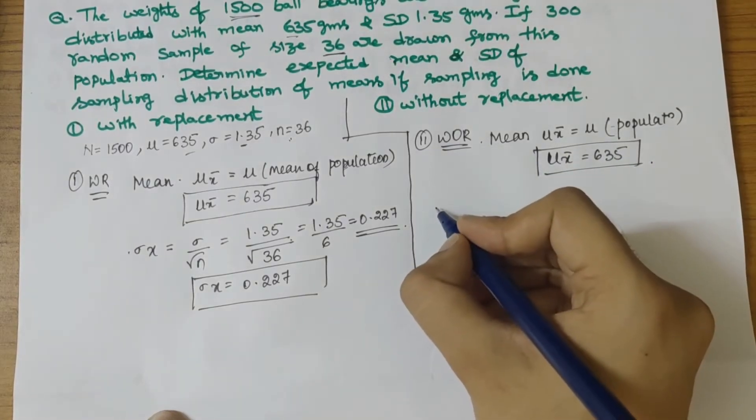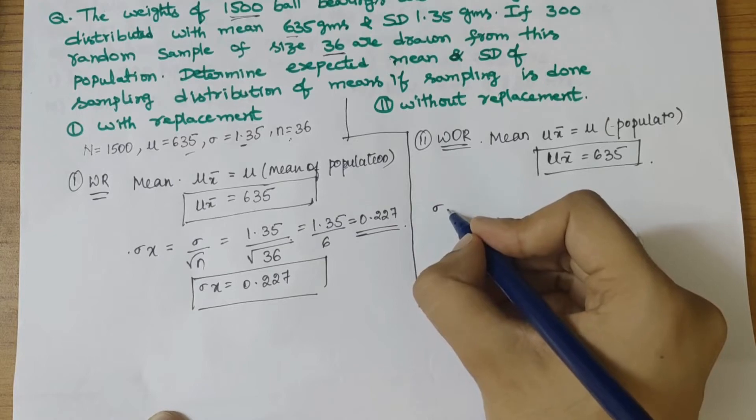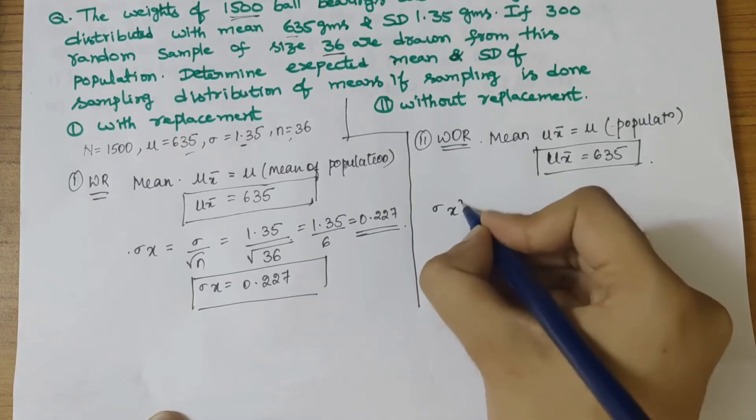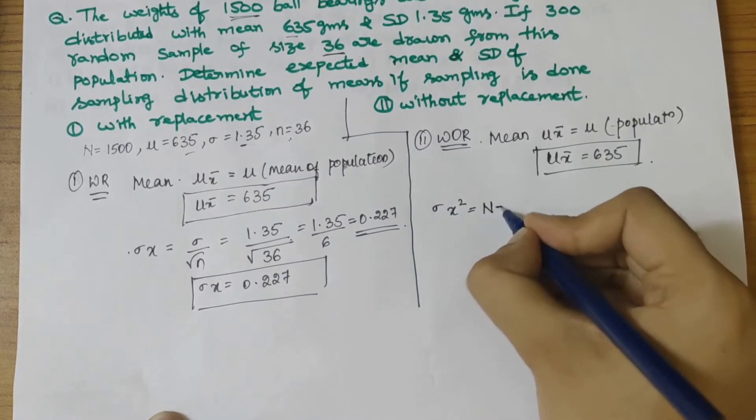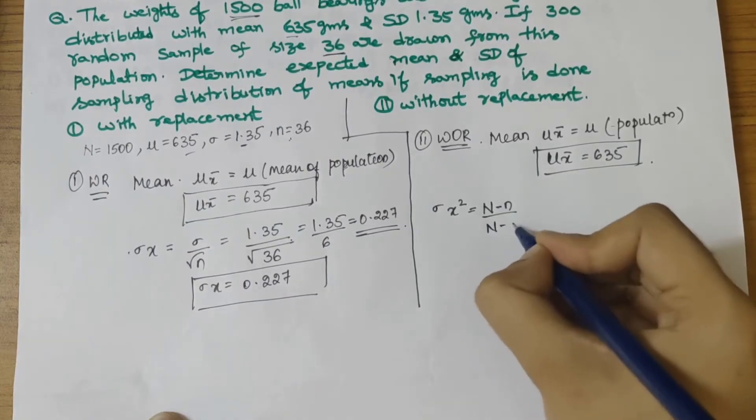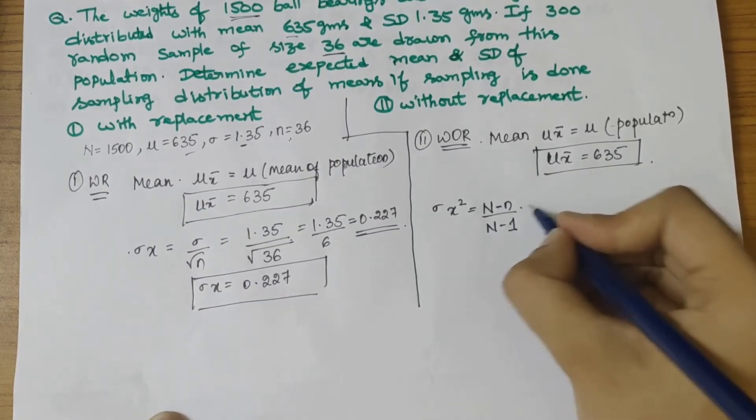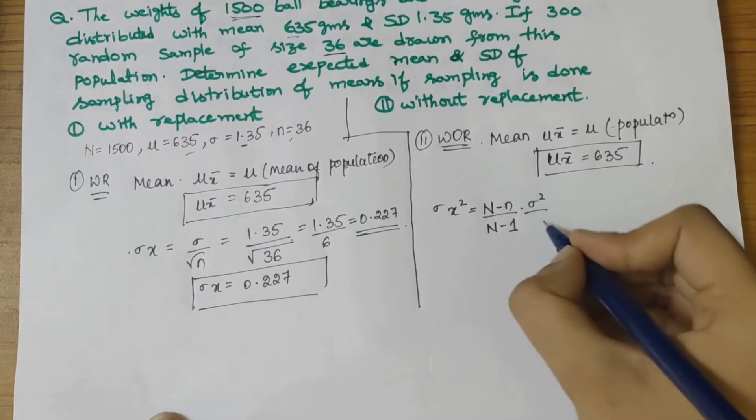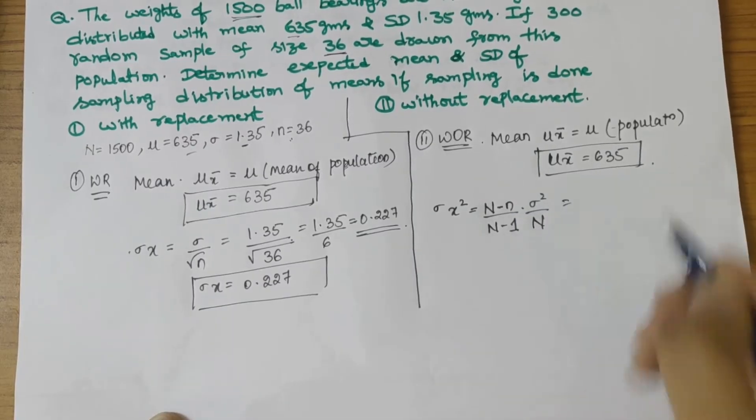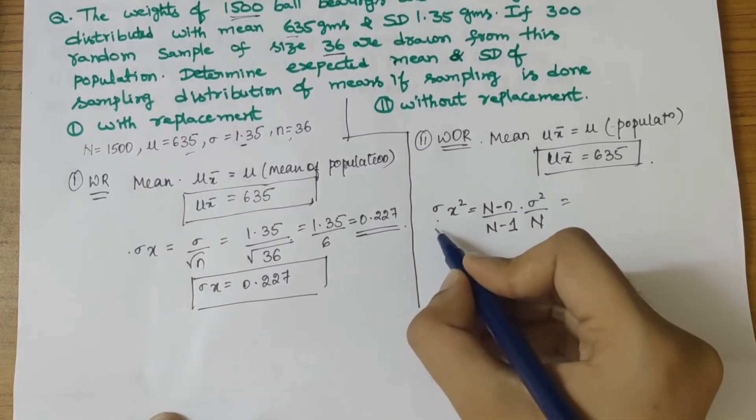For the standard deviation, let's first write the variance formula: (N-n)/(N-1) × σ²/n. This gives us the variance.